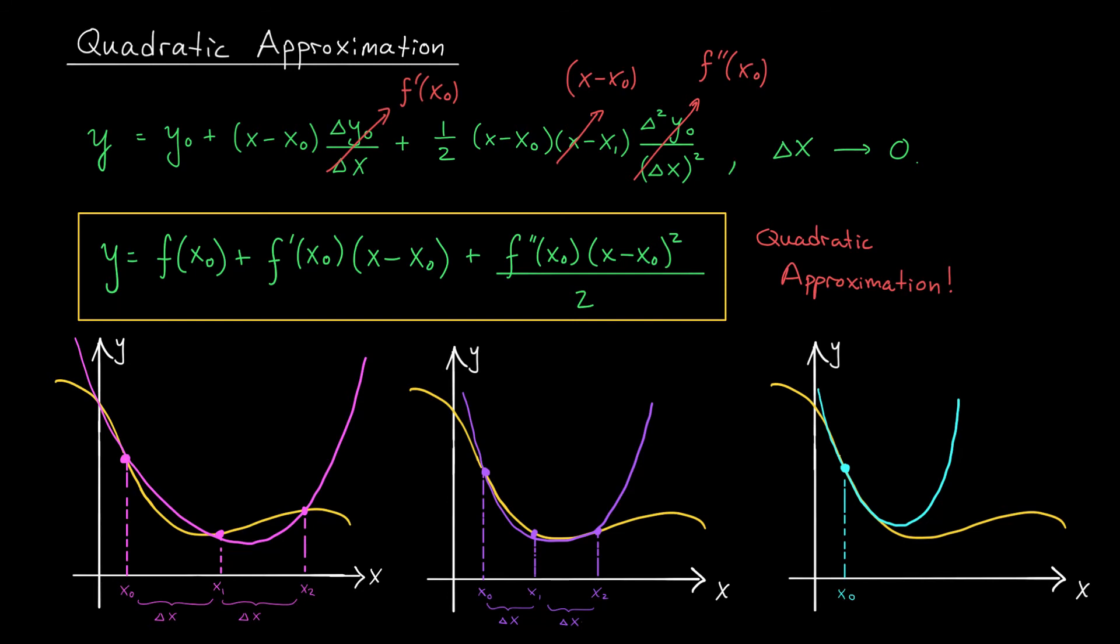But why stop here? Why stop with a quadratic? Let's see if we can extend these ideas one more time to get a better approximation using a polynomial of degree n.